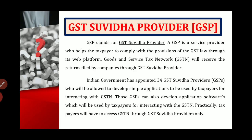The Goods and Services Tax Network will receive returns filed by companies through GST Suvidha Providers. The GSP is an additional layer between the government's GST Network and the taxpayer. GST Network does not directly receive information from a taxpayer. When a taxpayer files a return, it first goes to the GST Service Provider, and the GST Service Provider then transfers that information into the GST Network.